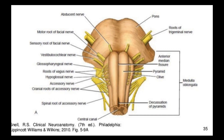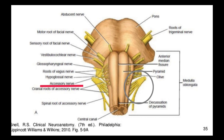Now let's talk about the nerves of the medulla. The pyramid is present, and after the pyramid is the olive. Between the olive and the pyramid runs the hypoglossal nerve. On the lateral side of the medulla there are many roots emerging laterally. These roots come together to form one nerve, which is called the accessory nerve.